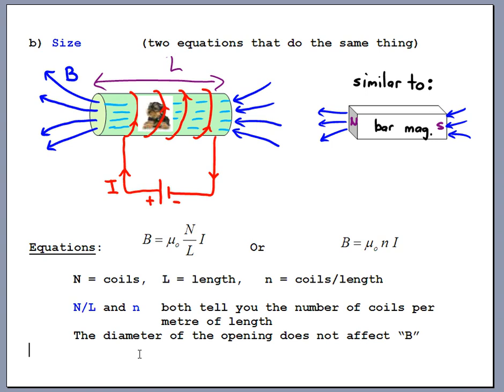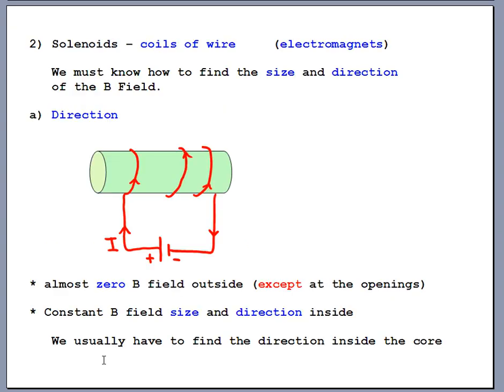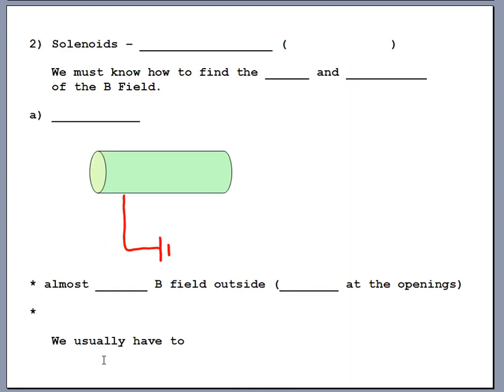That's our go-to way to make strong magnetic fields: wrap wire around something like a paper towel roll and create an electromagnet where you can place your experiment on the inside. That's the end of our first day. The main physics comes down to just two equations: B = μ₀nI for the magnetic field inside a coil, and B = μ₀I / (2πr) for the magnetic field near a long straight wire.